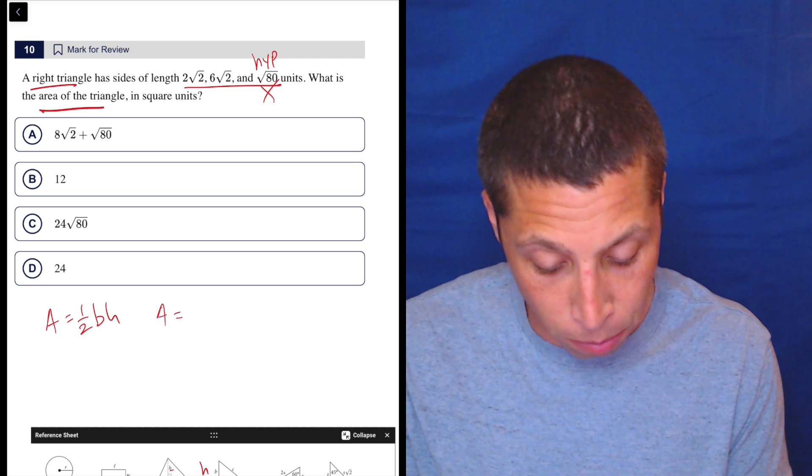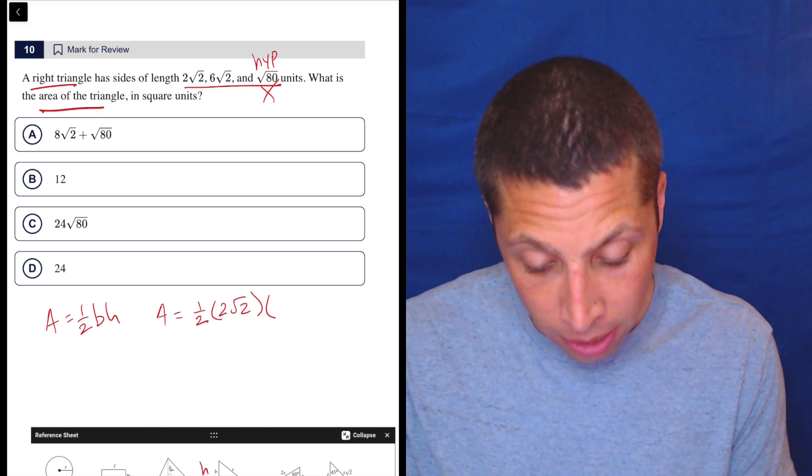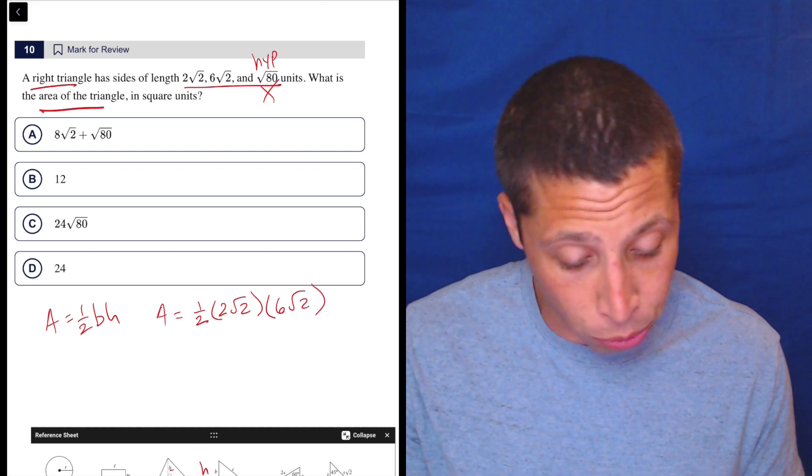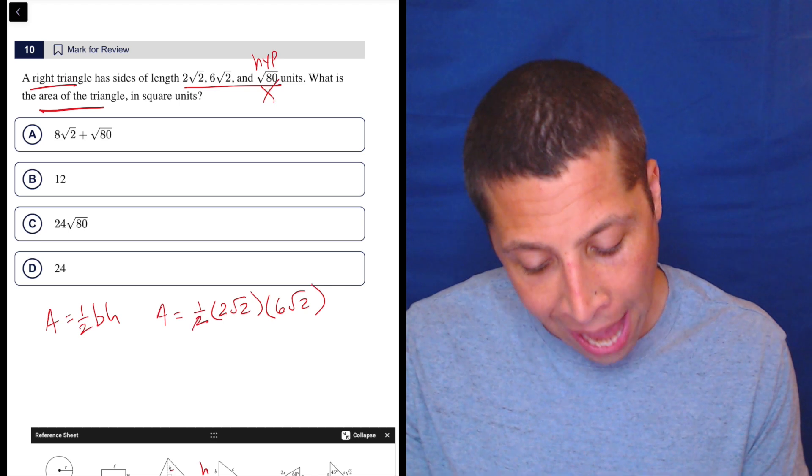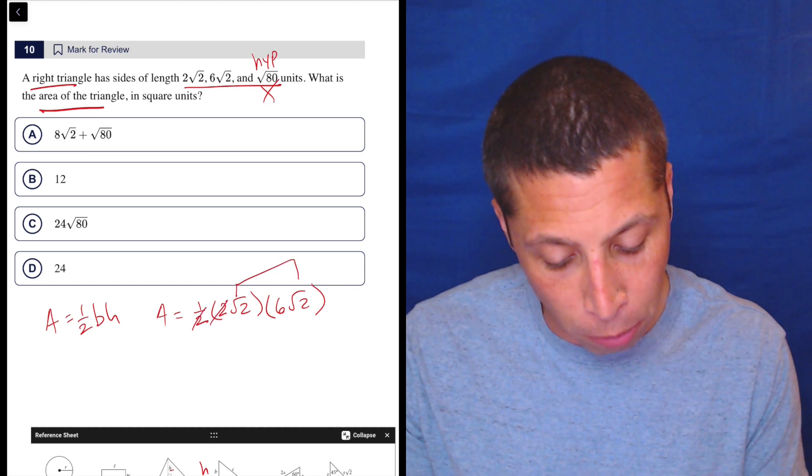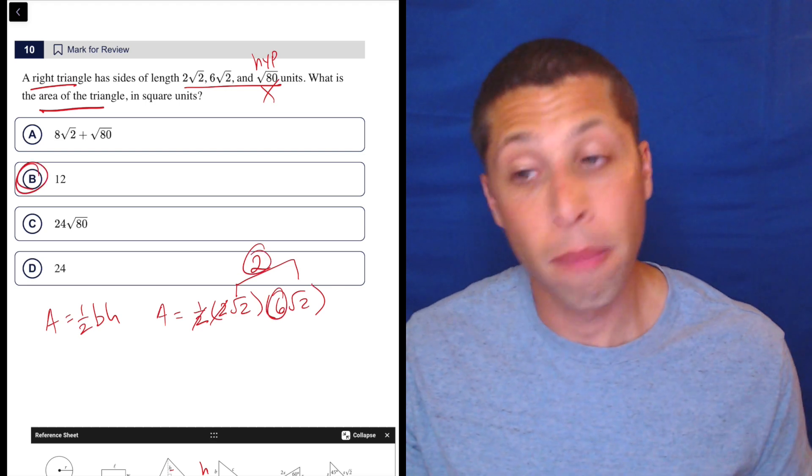So the area is going to be 1/2 times 2√2 times 6√2. Actually, we could just go to the Desmos at this point as well, but I don't think it's that bad. The half and the 2 we're going to cancel. The √2 and this √2 we're going to multiply to a regular 2, and then 2 times 6 is 12. B is the answer.